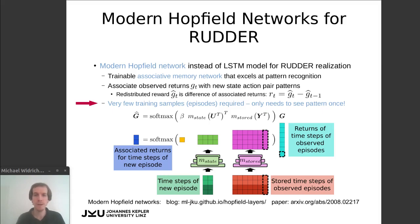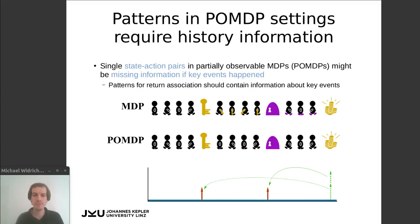It only needs to observe an important pattern once to associate it with a higher return value. In practice, we run into issues if we consider POMDP environments and use single state-action pairs at a certain time step as patterns. This is because these patterns might lack information about the history of the episode — the previous state-action pairs — which might be very important to associate the pattern with a high or low return value. For example, it is very difficult to tell whether it's a good or bad idea to walk towards a door if we do not know whether we have collected the key or not.